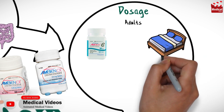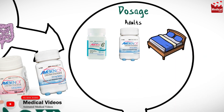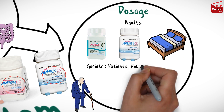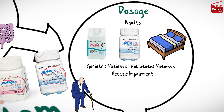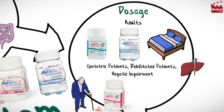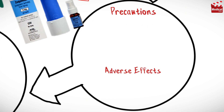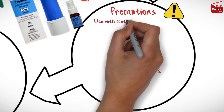The adult dose may alternatively be 12.5 milligrams extended-release tablet at bedtime. For geriatric patients, debilitated patients, or patients with hepatic impairment, the usual dose is 5 milligrams at bedtime or 6.25 milligrams extended-release tablet at bedtime.